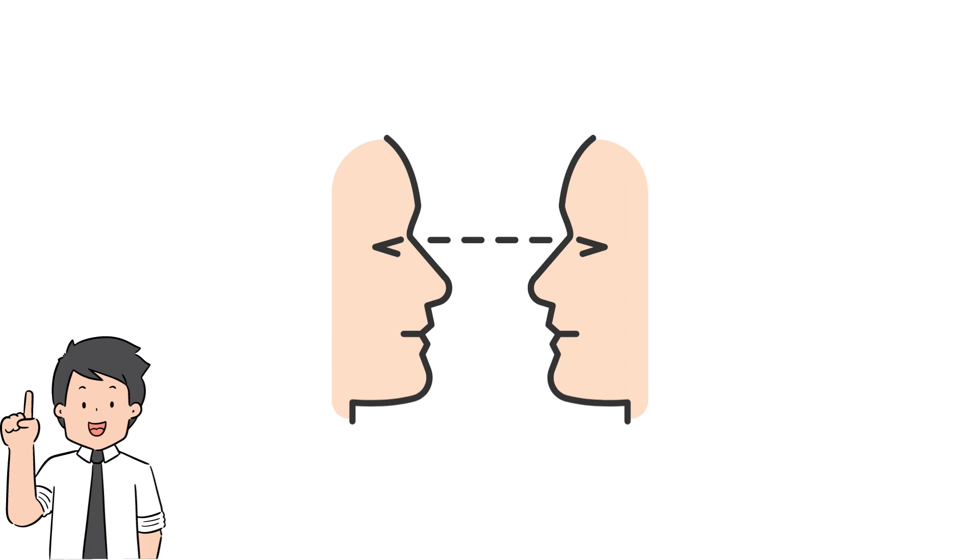So maintain eye contact during the question and answer session and look at the audience member or the examiner who has given you the question and look at them when you answer them. Not only will this make you appear more confident, but it gives the audience the feeling that you are actually talking to them and not just talking to the room.